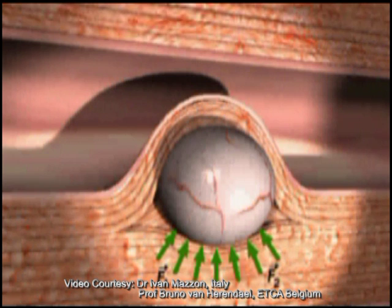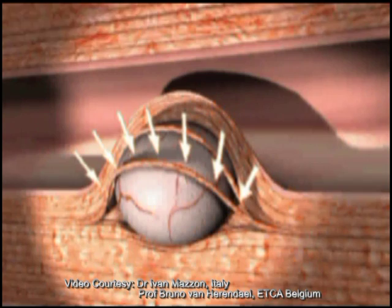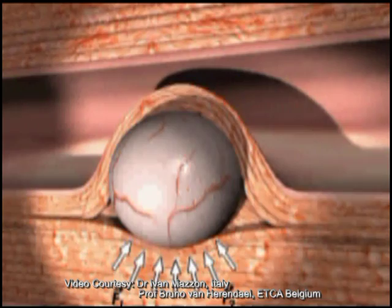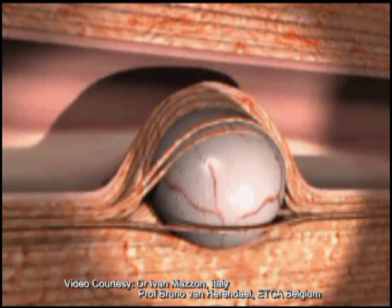If we understand the forces acting on a fibroid, it becomes clear that the position of a submucous myoma is determined by the stronger of two opposing forces: the myometrium behind the fibroid trying to push the fibroid into the cavity, and the myoma capsule between the fibroid and the cavity holding it back. If these restraining capsular fibres are incised, the myoma automatically starts projecting into the cavity due to the force of the underlying myometrium.